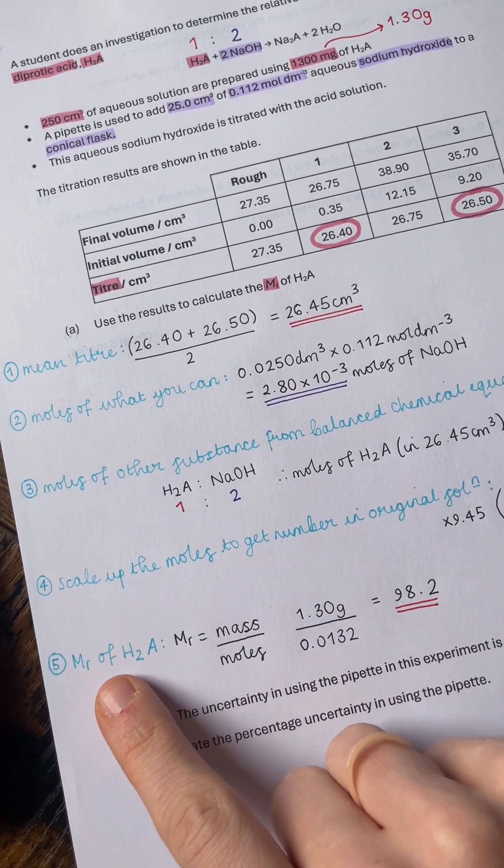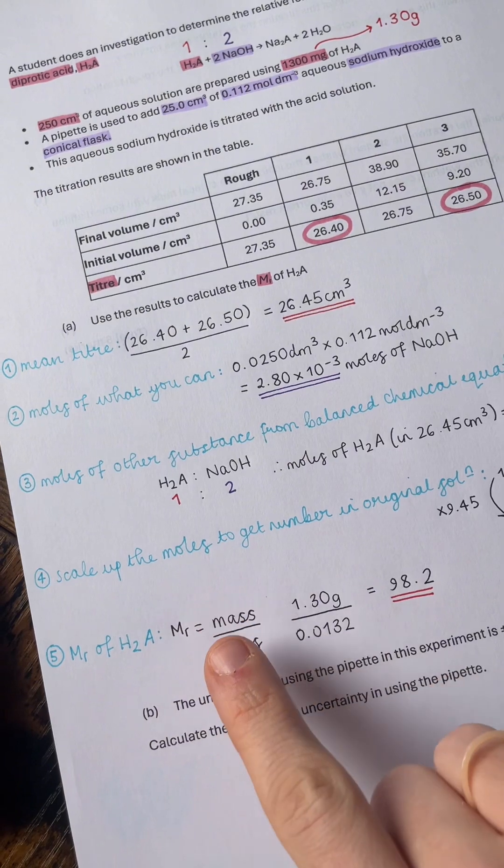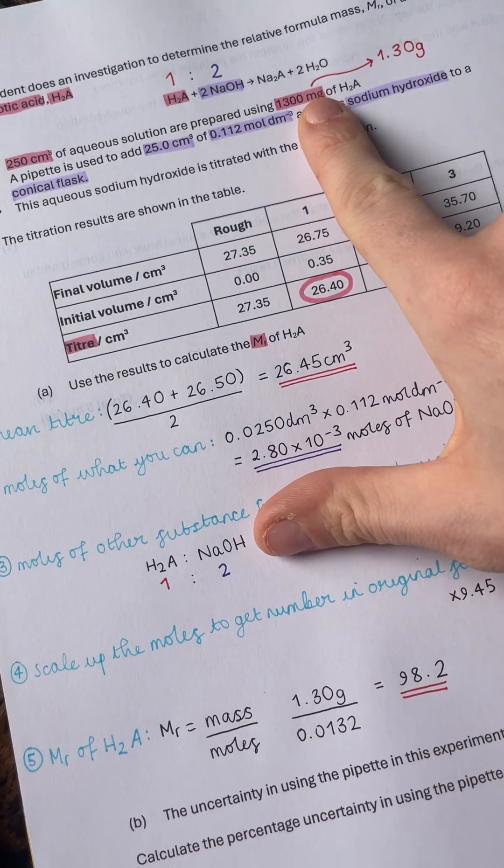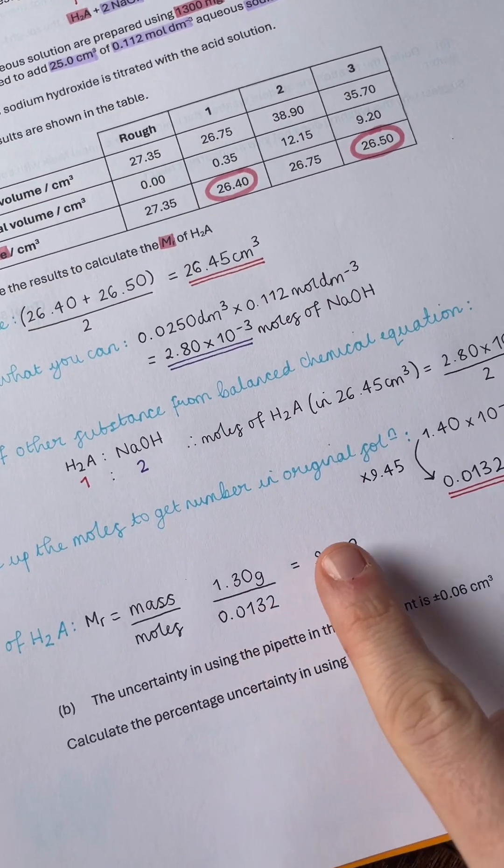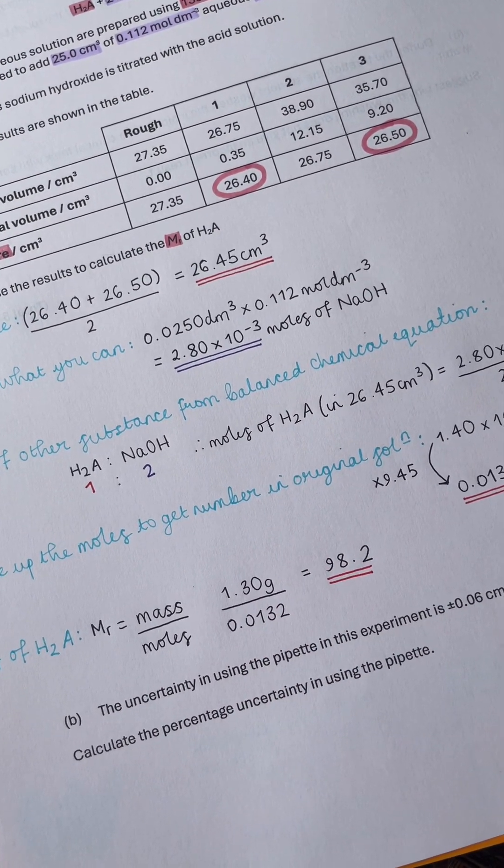From there, we can do step five, which is to get the MR: mass divided by moles. The mass I already converted from milligrams into grams, we've just got the moles. That gives me an MR of 98.2.